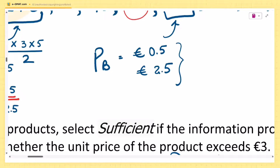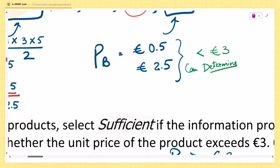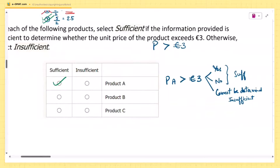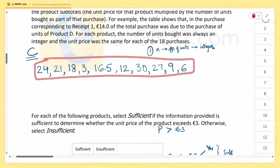Both possible values of pb — 0.5 euro and 2.5 euro — are less than 3 euros. So we can determine that pb does not exceed 3 euros, and the answer is sufficient.